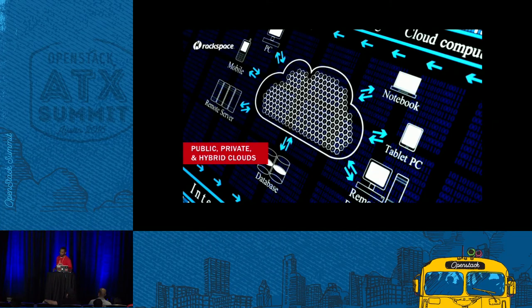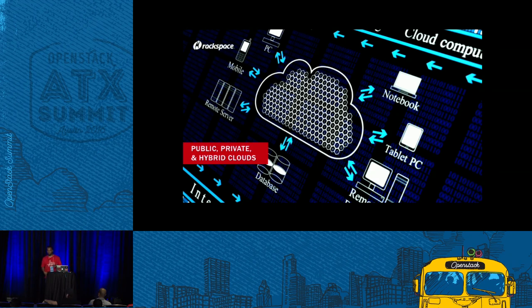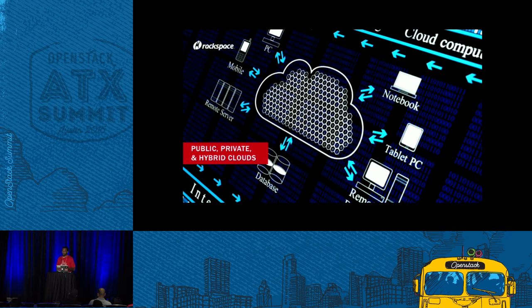There are three types of cloud: public, private, and hybrid. The public cloud is generally the most well-known and straightforward type. This is like your AWS. Public commodity cloud providers typically offer convenience — it's easy for enterprises and developers to set up, use, and access. Scalability is often a driving factor because you can spin up resources really quickly and spin them down really quickly.